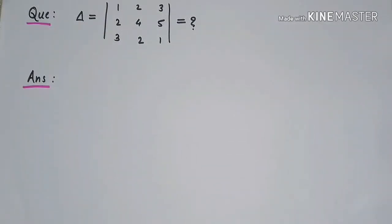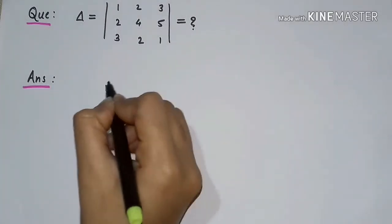If we want to find quick solution of a 3 by 3 determinant, we have to first write all the columns as it is. So write first all the columns.